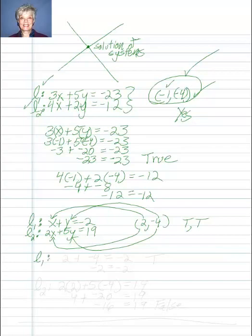Line 1: x plus y equals negative 2, so 2 plus negative 4 equals negative 2. Is that true? Yes, it is. Negative 2 equals negative 2. So I have one true answer.